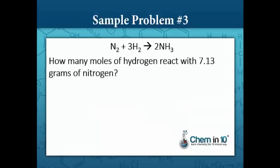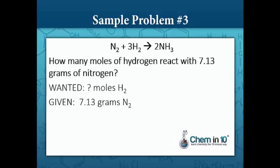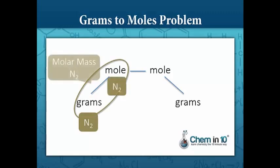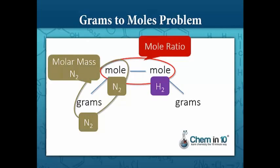Sample problem number three — same equation. How many moles of hydrogen react with 7.13 grams of nitrogen? We want to know the moles of hydrogen and we're given 7.13 grams of nitrogen, so this is going to be a grams-to-moles problem. We start off with grams of nitrogen and will need to convert that to moles of nitrogen using the molar mass of nitrogen, and then convert to moles of hydrogen.